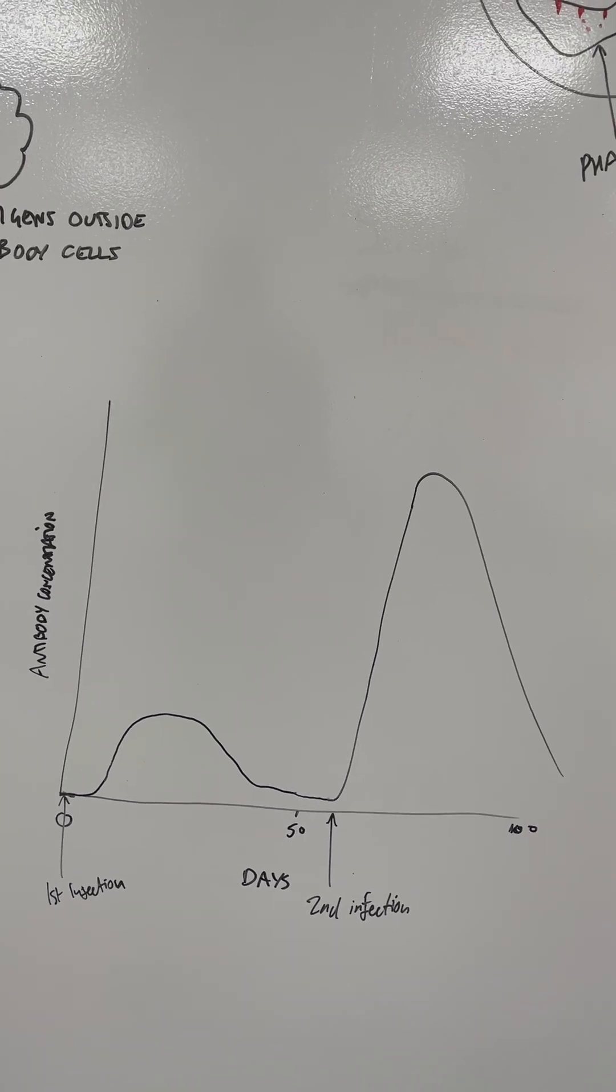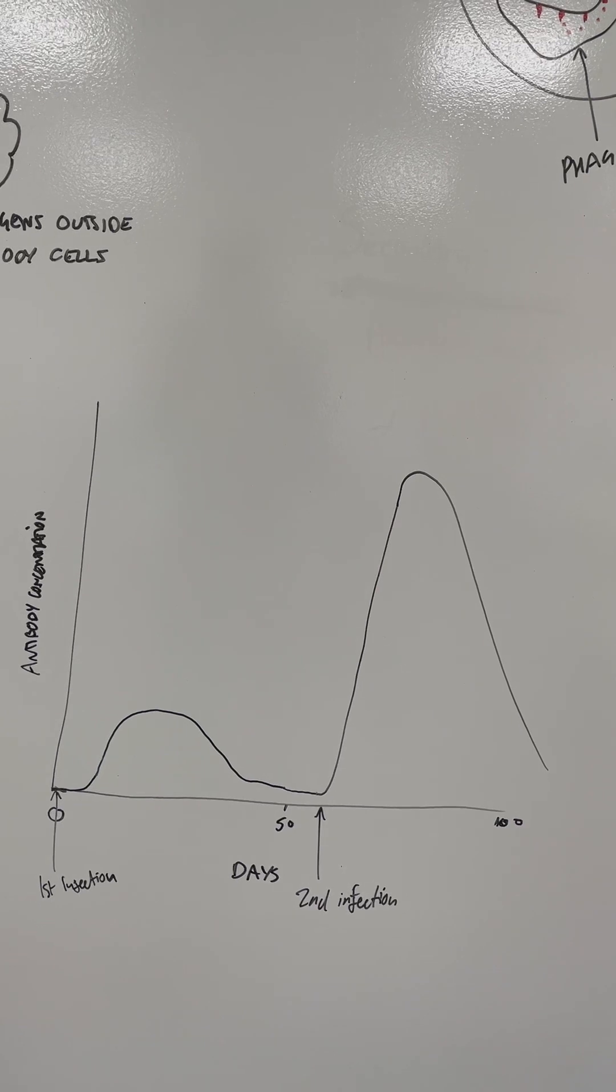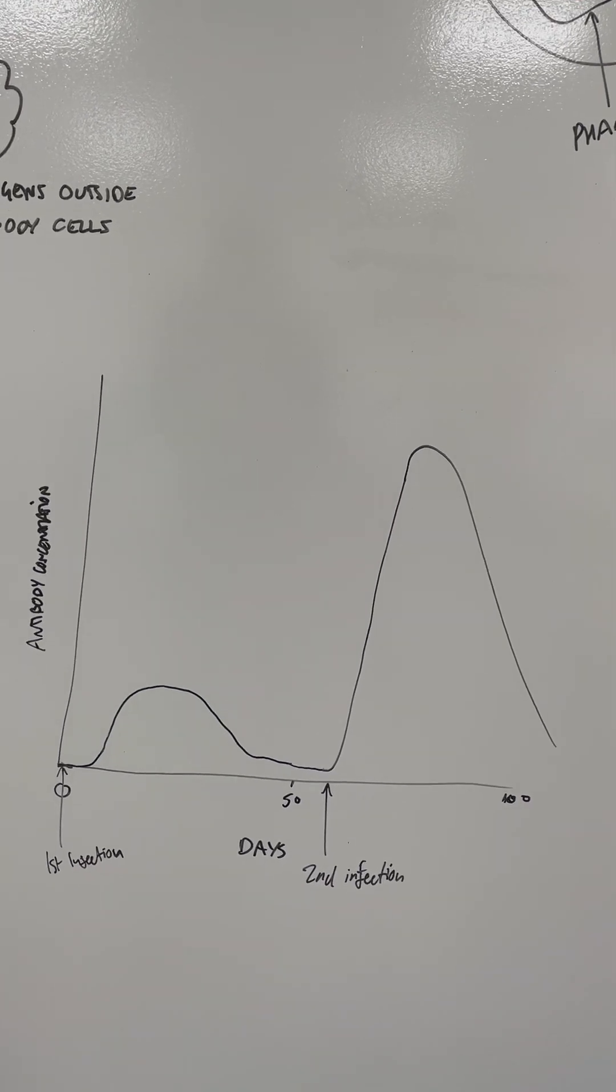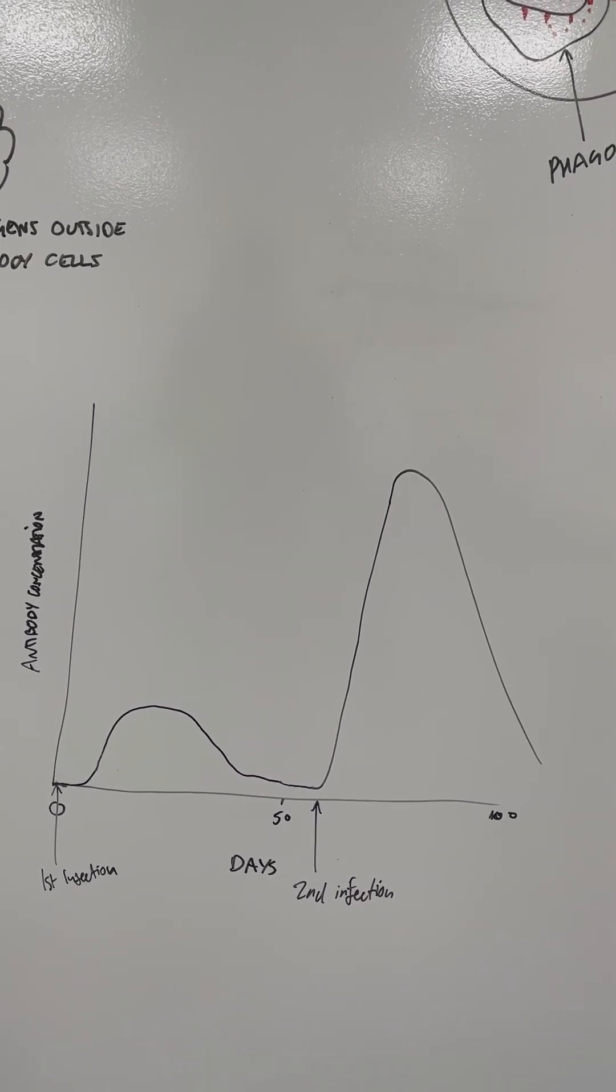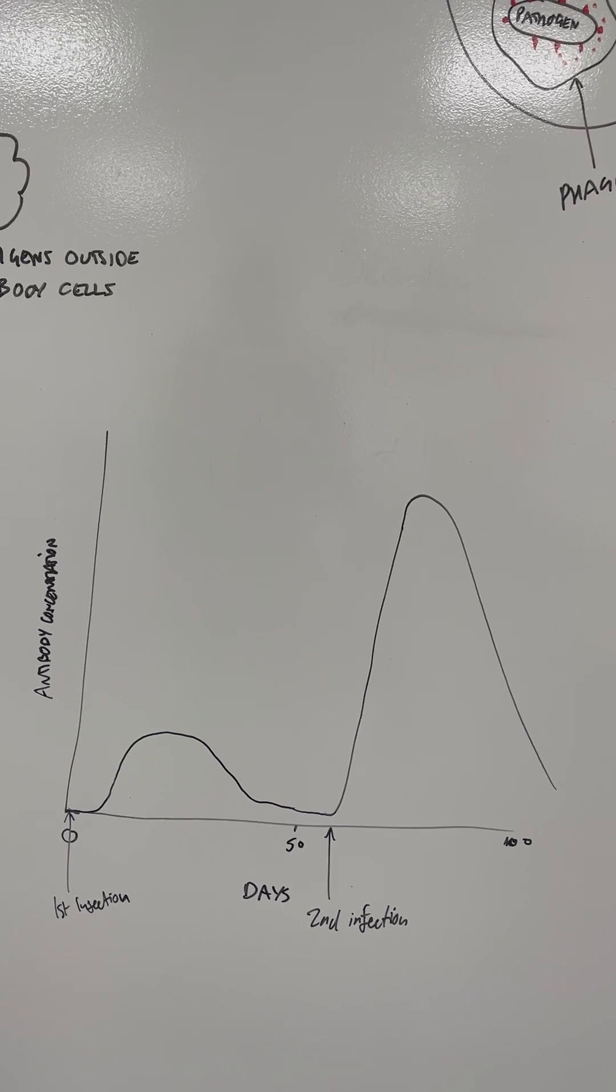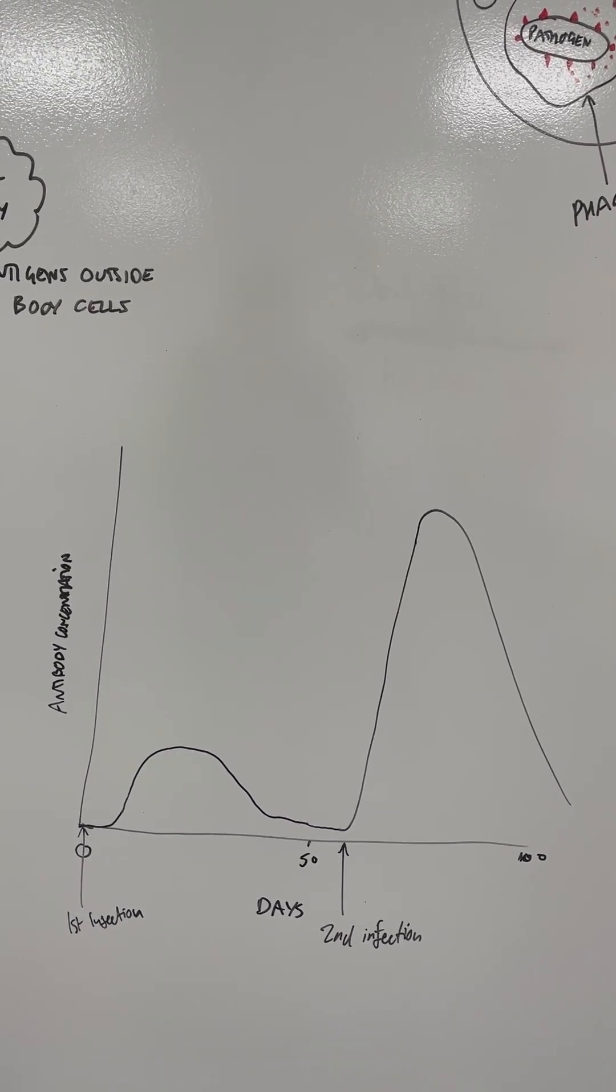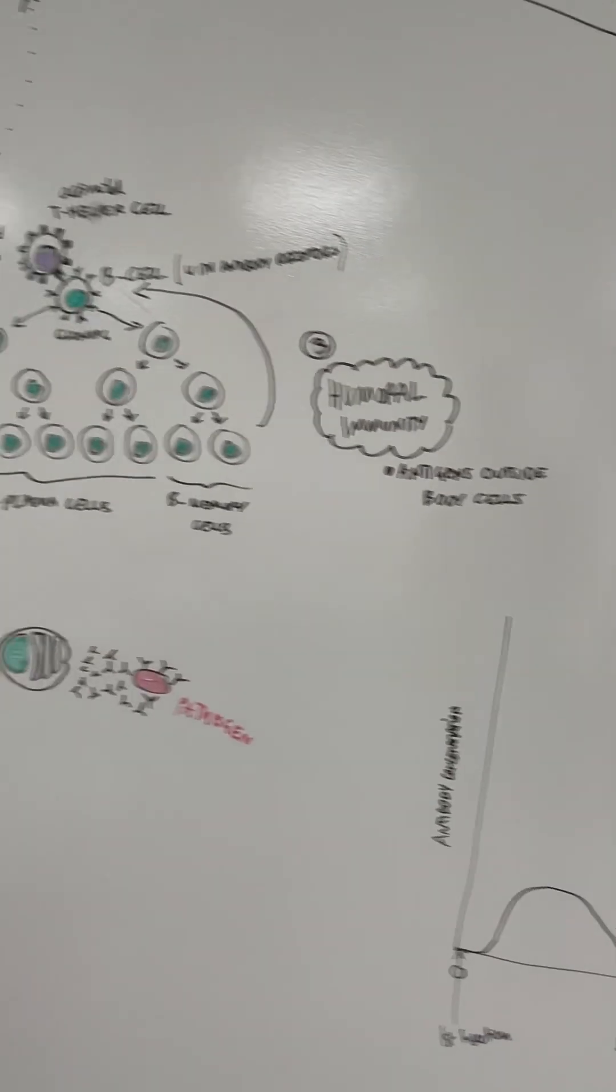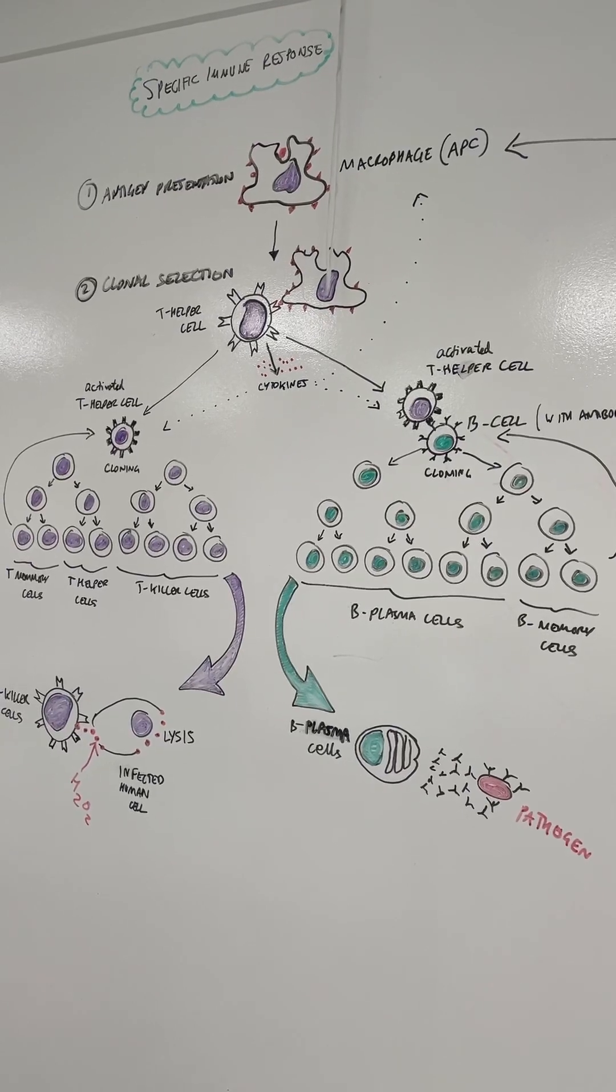So it takes a while for that graph to get going. Then hopefully you get better and the antibodies go down a bit. Let's say you get a second infection a month or two later. Look how much quicker the graph shoots up and you get a huge increase in antibody production very rapidly. That's what we call the secondary immune response, and that is because of the immunological memory cells that you have got through the specific immune response.